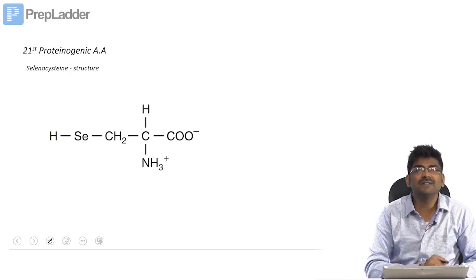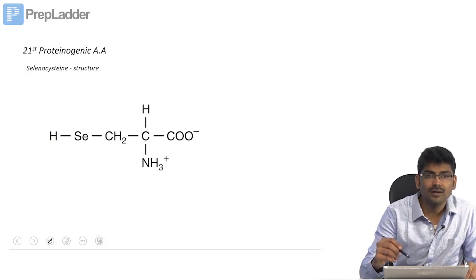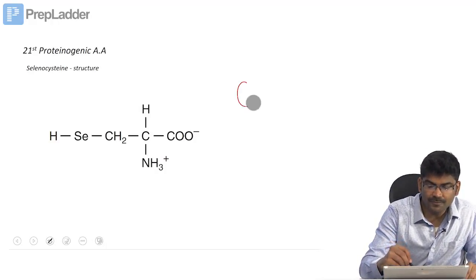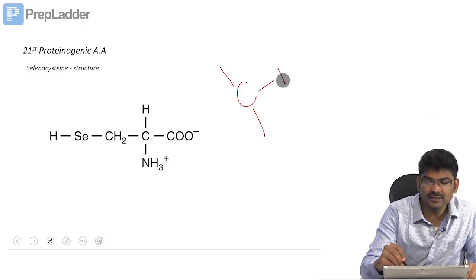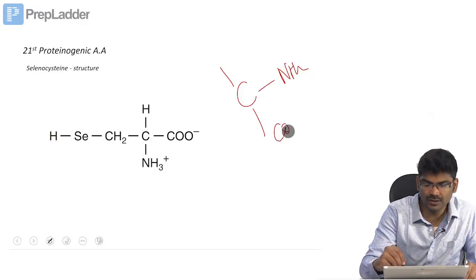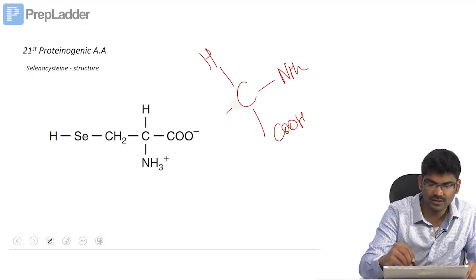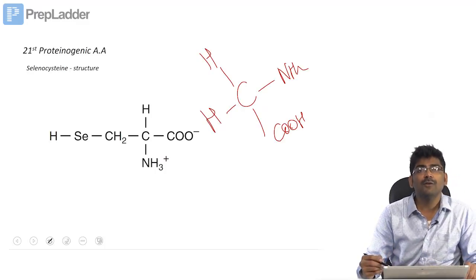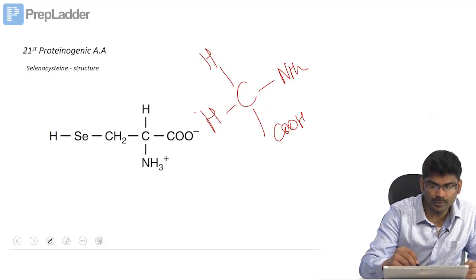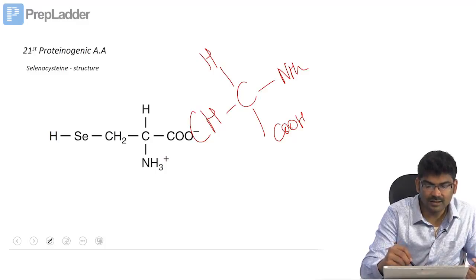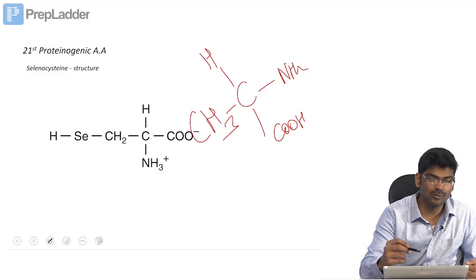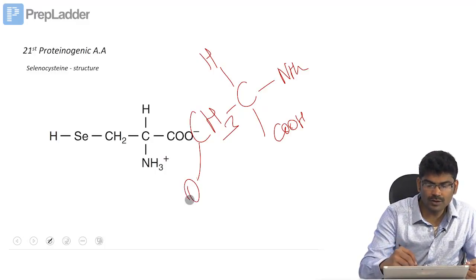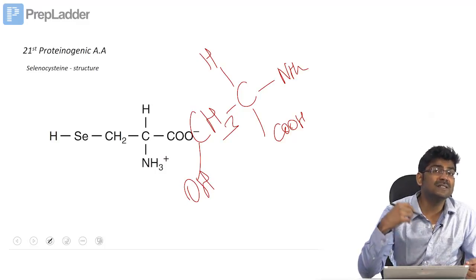Let us first see the structure of selenocysteine. You all know the structure of glycine. Glycine is the simplest amino acid, right. NH2, COOH, H, H. If you put a CH2 group in glycine, that will become alanine. If you put an OH group in alanine, that will become serine.